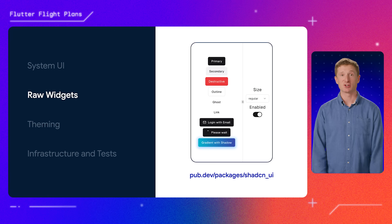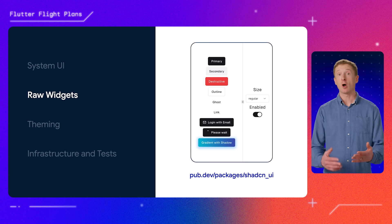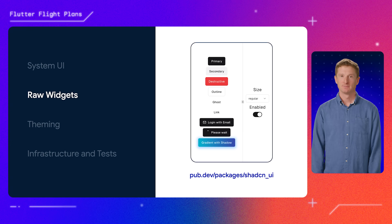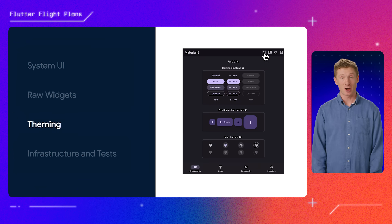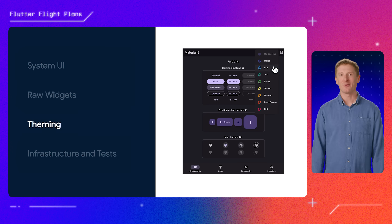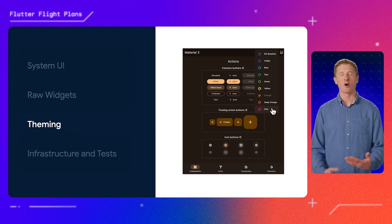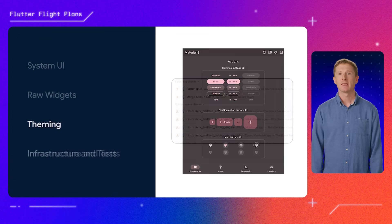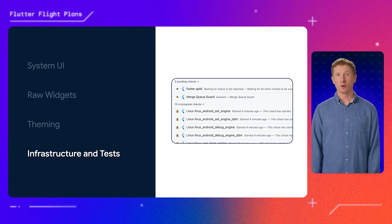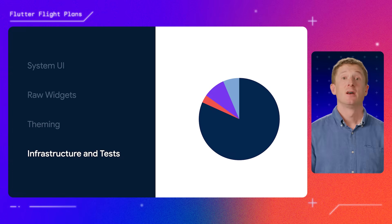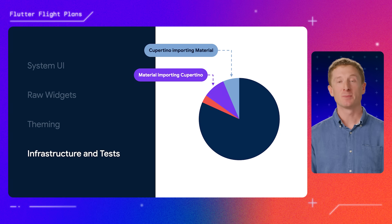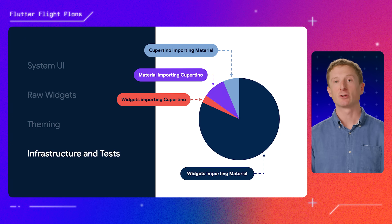Second, we'll be improving code organization with the goal of empowering design library authors by creating more raw widget abstractions in the widgets library. Third is theming. As it currently stands, Material's theme and Cupertino theme don't share a common ancestor and widgets has no theming at all. So we're in the process of evaluating whether there are any theming changes we can make to better support developers who aren't using Material or Cupertino. And finally, our Material and Cupertino widgets currently use a lot of infrastructure in the Flutter repo like CI pipelines that run all the tests. So we're going to be reviewing, refactoring, and migrating over 200 tests from across the Material, Cupertino, and widgets libraries to make sure that we avoid cross-importing from each other.